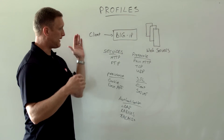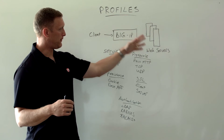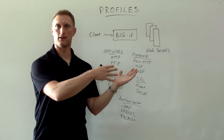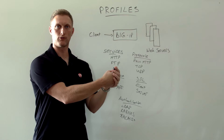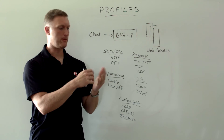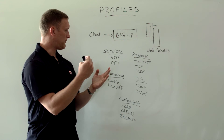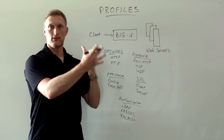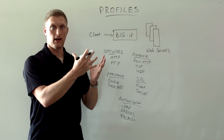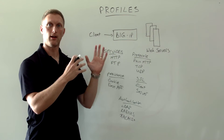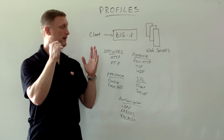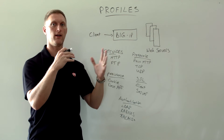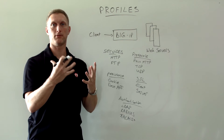Imagine clients coming through the BIG-IP to go to a web server — the traffic gets routed to a certain virtual server, and maybe it's HTTP traffic. Maybe you're doing an SSL offload. The question is, how do you deal with all that? You set up these profiles, and what they do is allow you to manage your application traffic in a very highly optimized way.